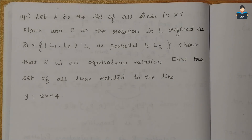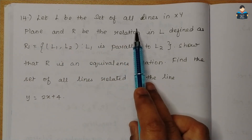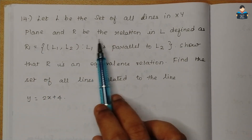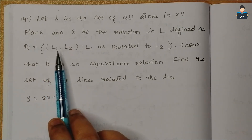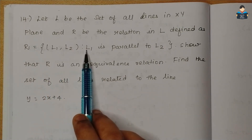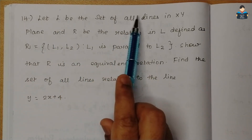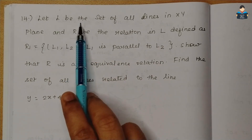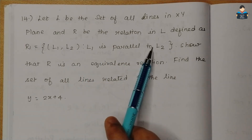Hello everyone, welcome to our channel. In this video we will look at the standard NCERT Math Chapter 1 Relations and Functions, Exercise 1.1, 14th question. Let L be the set of all lines in the XY plane, and R be the relation in L defined as R = {(L1, L2) : L1 is parallel to L2}.